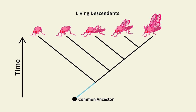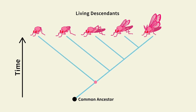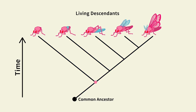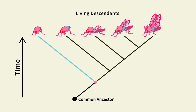Moving forward in time, we see what happened over many generations. Here we reach our first branch point, where one lineage split into two. The branches are defined by differences in the traits of the descendants. The organism connected to the left branch is the simplest, while all of the ones connected to the right branch have an additional body segment. This trait evolved in this lineage after the branch point.